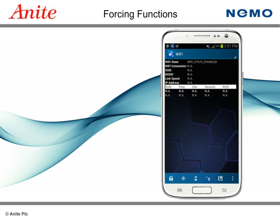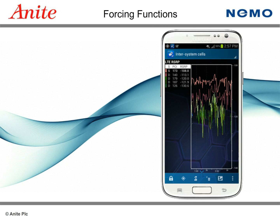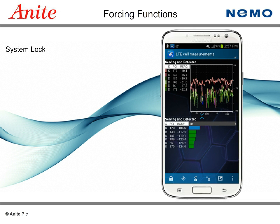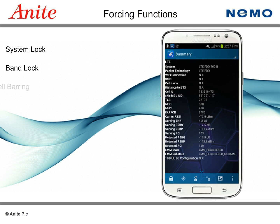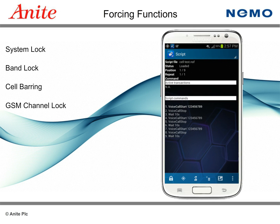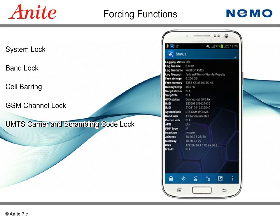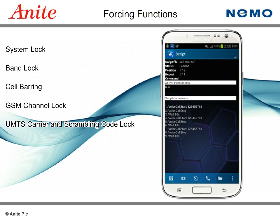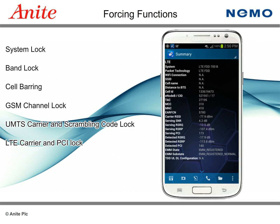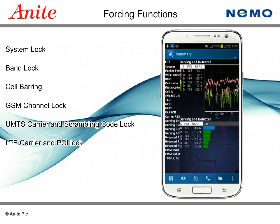Additionally, the Nemo Handy supports advanced forcing features including system lock, band lock, cell barring, GSM channel lock, UMTS carrier and scrambling code lock, and LTE carrier and PCI lock.